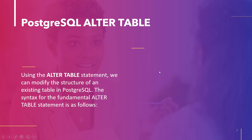Now let's move to the first topic: PostgreSQL ALTER TABLE. We can change the structure of an existing table in PostgreSQL by using the ALTER TABLE statement. The syntax for the basic ALTER TABLE statement is: ALTER TABLE, followed by TableName and Action. TableName is the name of the table to be modified, and Action can be any alteration supported by PostgreSQL.